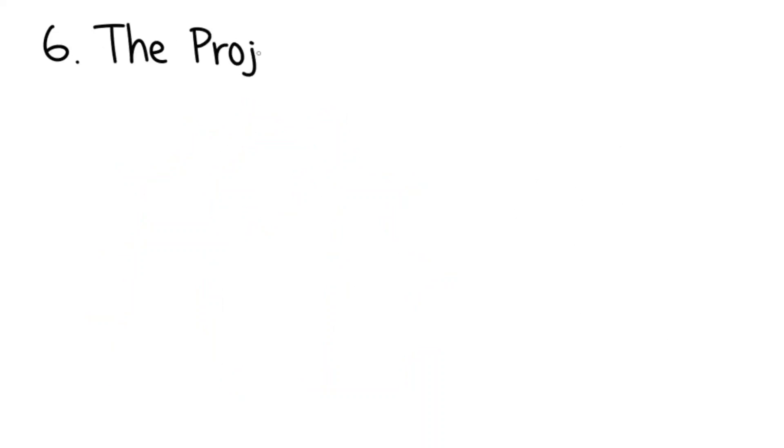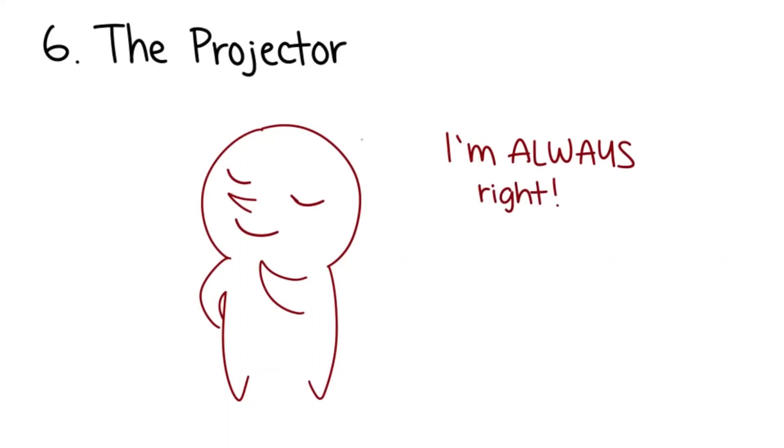6. The Projector. The projector thinks they're perfect and that others have all the flaws. They take no ownership because they're never, ever, wrong.